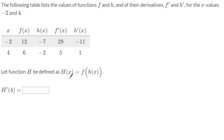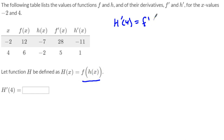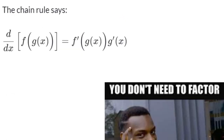Now, let h of x be defined as the composite function f of h of x. And so they want to know what h prime of 4 is. First, let's do the derivative of h of x. What's the derivative of f of h of x? That's going to be f prime of h of x times the derivative of the inside guy, h prime of x. Do this every single time — set up what I call a skeleton equation of what the derivative is, using the Chain Rule.